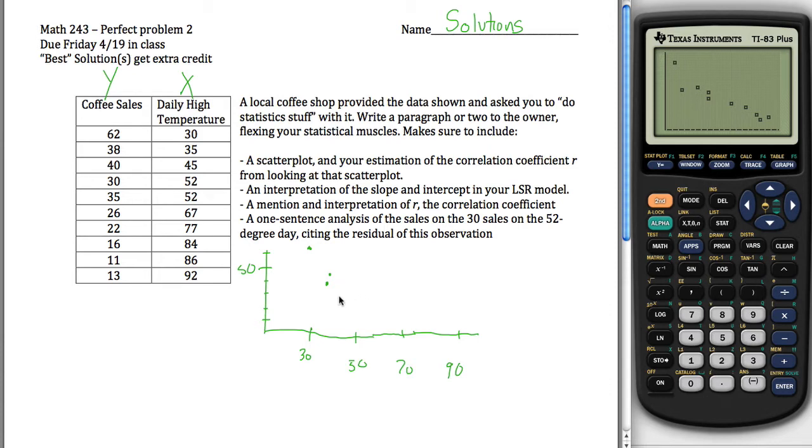Okay. So the fourth observation is when it was 52 degrees out, I sold 30 cups of coffee. So a little bit to the left of 50, 30, something like that. 52, I had a 35 day. 35 would be just above that, something like that. 67, I sold 26. 77, 22. 84, somewhere over here, only 16. 86, only 11. 92, 13, something like that. Here's my scatterplot, which looks something like this.